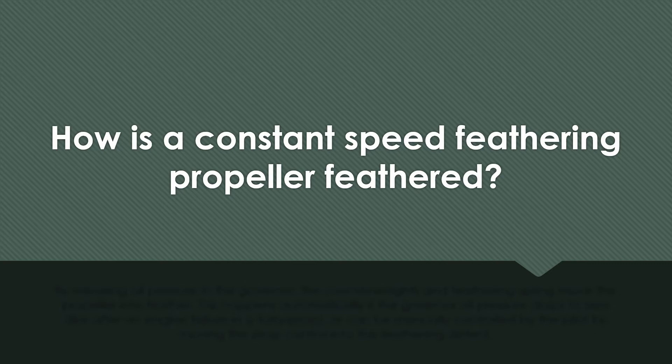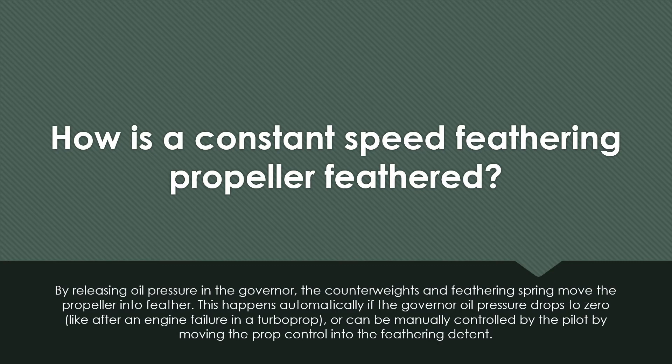How is a constant speed feathering propeller feathered? By releasing oil pressure in the governor, the counterweights and feathering spring move the propeller into feather. This happens automatically if the governor oil pressure drops to zero, like after an engine failure in a turboprop. Or it can be manually controlled by the pilot by moving the propeller control into the feathering detent.